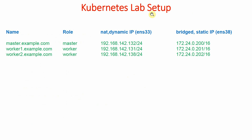Looking at the Kubernetes lab setup, the first system is named master.example.com and its role is the master node, which will be used for administering the cluster. It has two network cards: the NAT interface named ens33 and the bridge interface named ens38. The NAT interface obtained its address automatically as 192.168.142.132/24, while the bridge interface was given the static address 172.24.0.200.